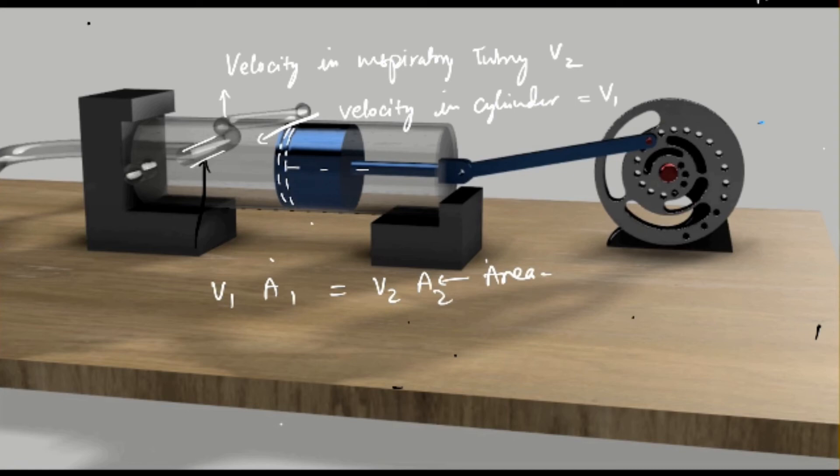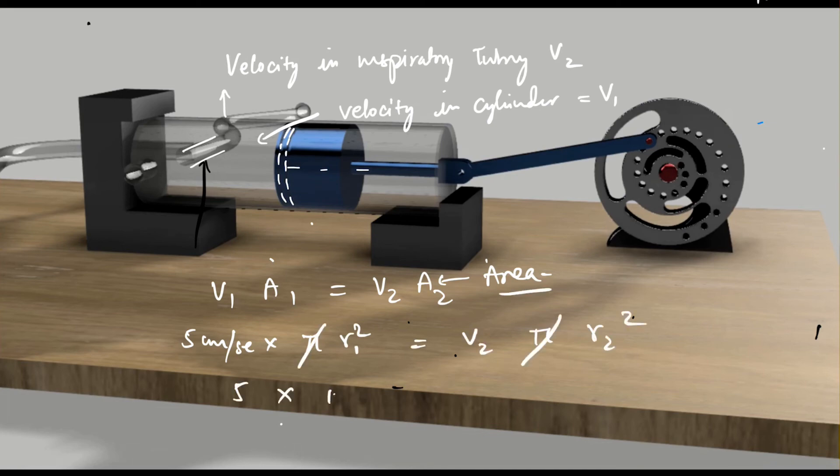The Bernoulli principle states velocity times area product would remain the same if all other variables like temperature and volume remain the same. So v1 times a1 will be equal to v2 times a2. V1 is the velocity of air in the air cylinder and a1 is the cross-section area of the air cylinder. V2 will be the velocity of air in the inspiratory tubing and a2 will be the cross-section area of the inspiratory tubing. The velocity of the piston can be calculated by the displacement upon the time taken to travel through that displacement.